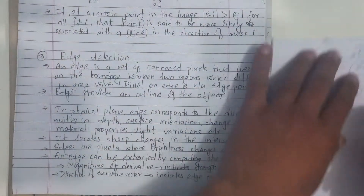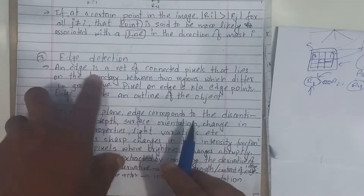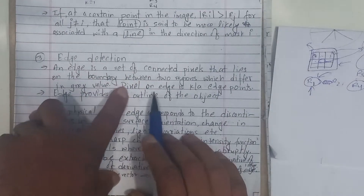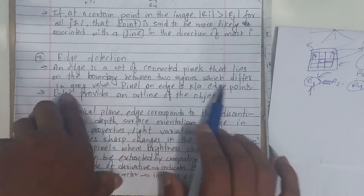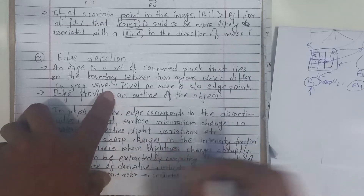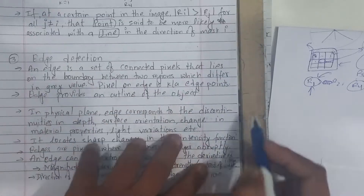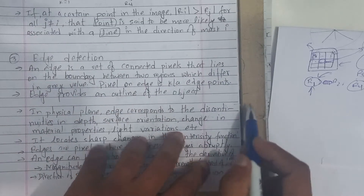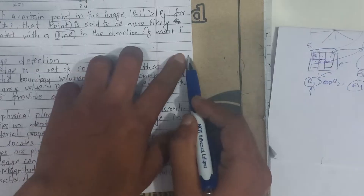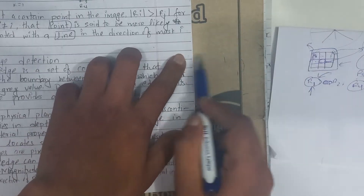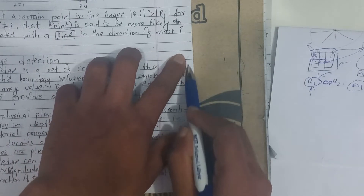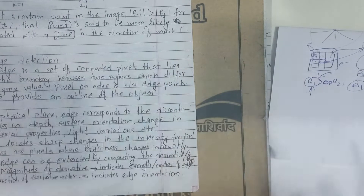An edge is a set of connected pixels that lies on the boundary between two regions which differ in gray value. This is the edge. This is the gray value change. This is the boundary — this is the edge.